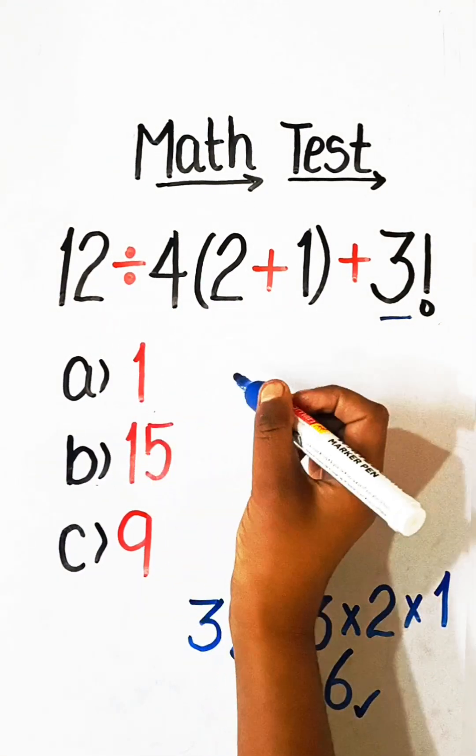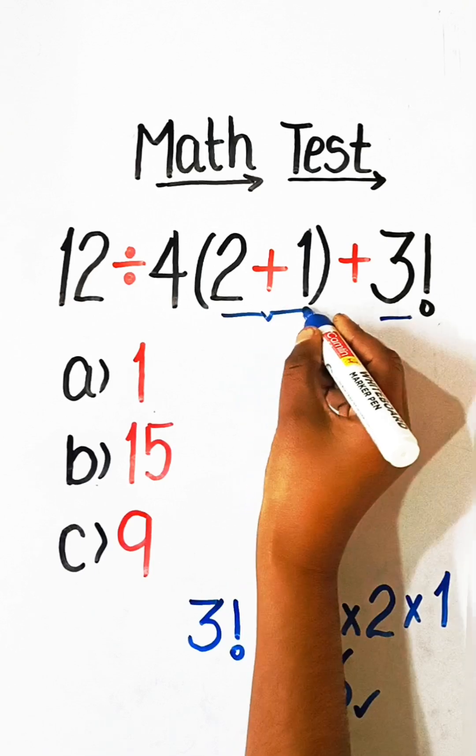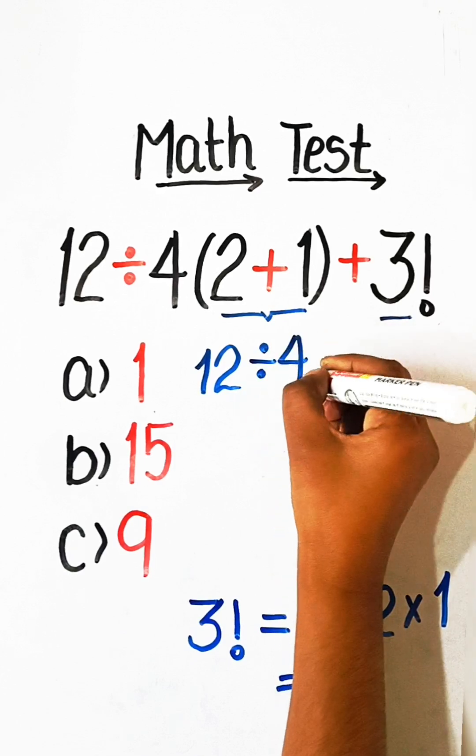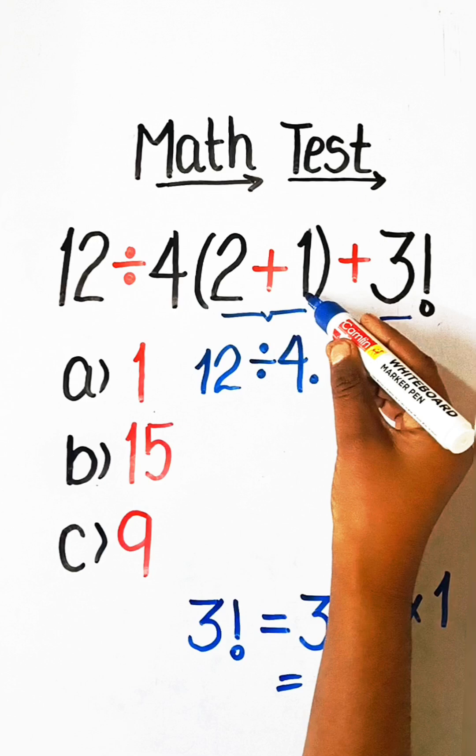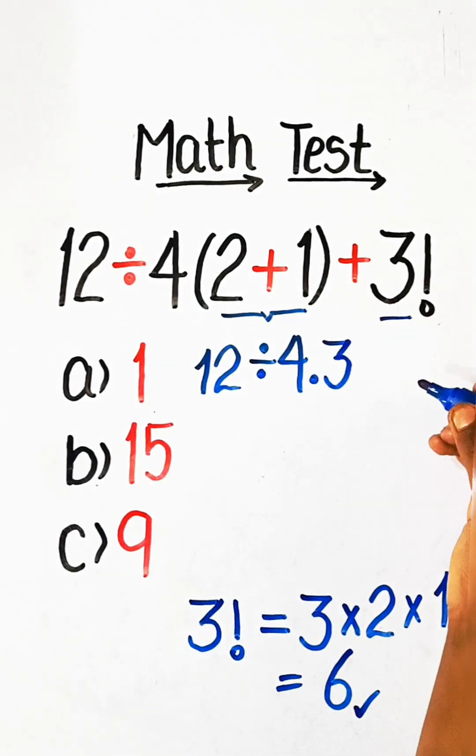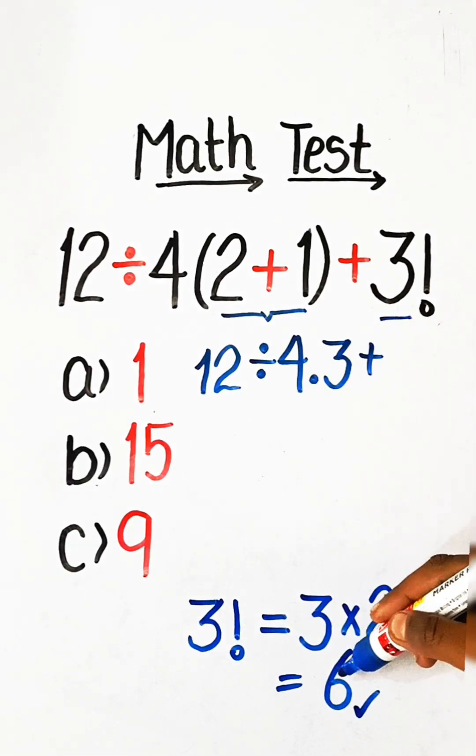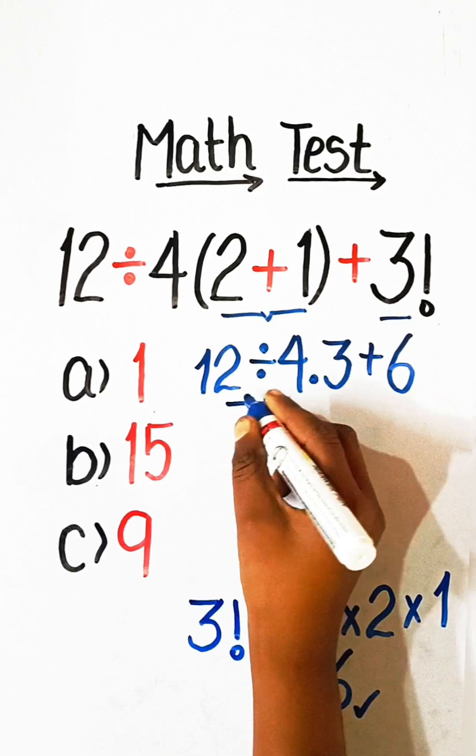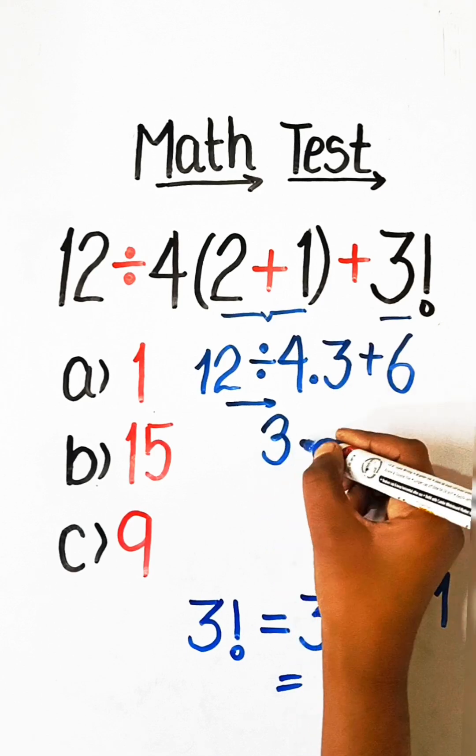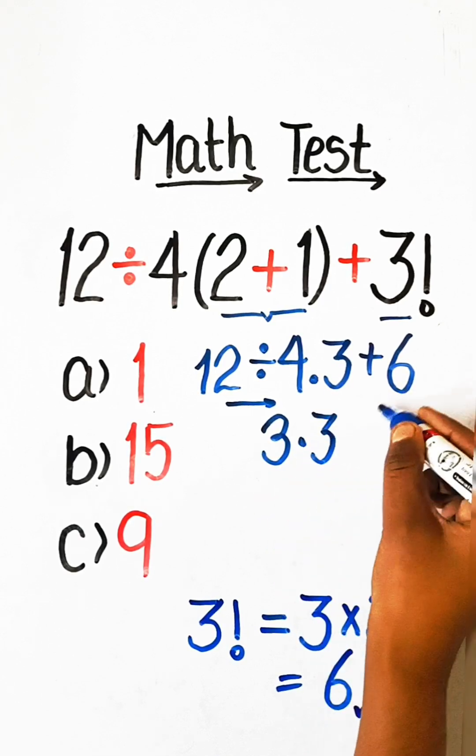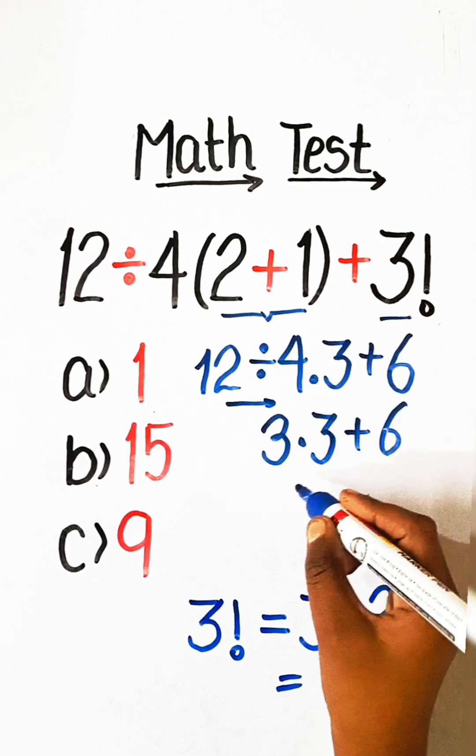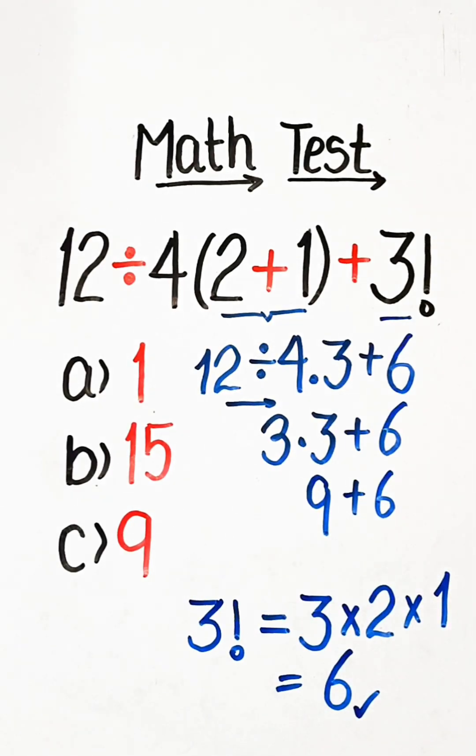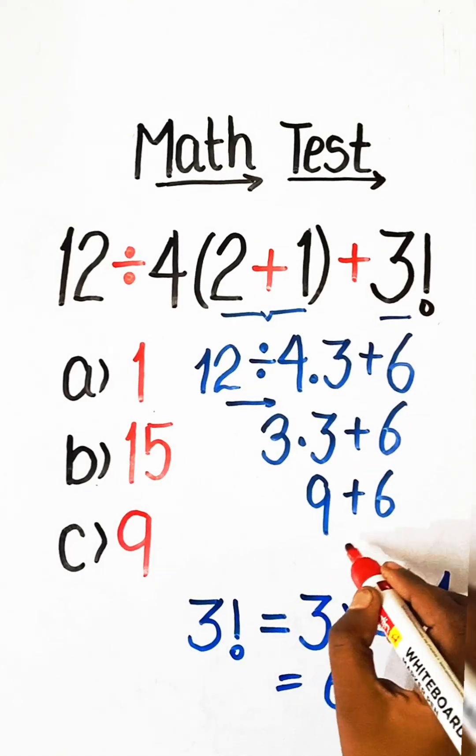So, we will solve this equation. First, we have to solve this bracket part. We will write here 12 divided by 4 multiplied by 2 plus 1 is 3 plus the value of 3 factorial is 6. So we will write here 6. 12 divided by 4 is 3 multiplied by 3 plus 6. 3 times 3 is 9 plus 6. 9 plus 6 equals 15.